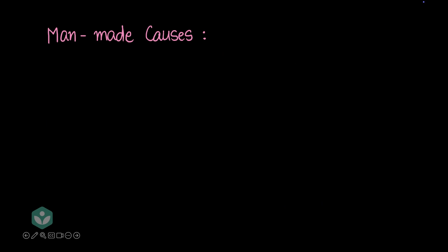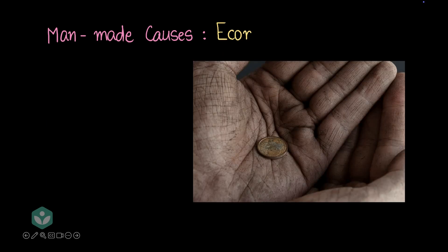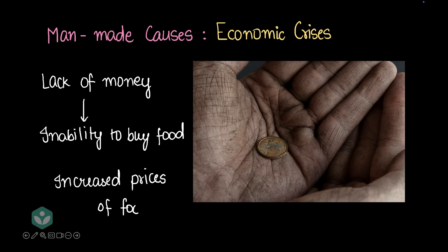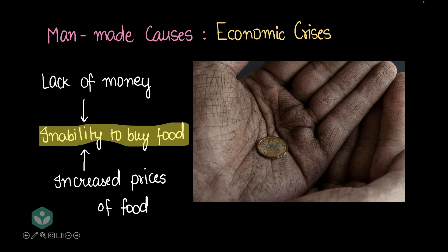The next man-made cause is an economic crisis. Lack of money can lead to the inability to buy food, but the inability to buy food could also be caused by increased food prices. Suddenly food prices increase and people could be stuck without any money to buy food. An economic crisis is usually not an independent reason for famine — it's usually coupled with some other reason.